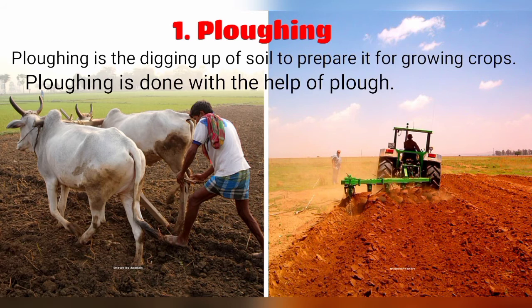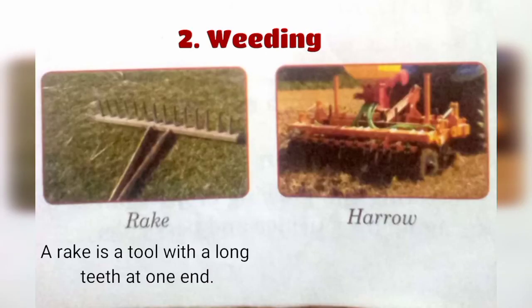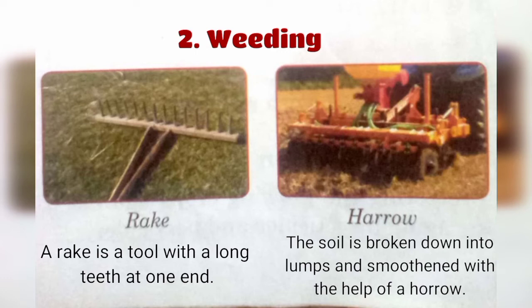Let us discuss plowing. Plowing is the digging up of soil to prepare it for growing crops. There are two different types of plowing: the traditional one, done with the help of animals, and the advanced one, done with the help of a tractor.